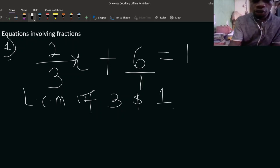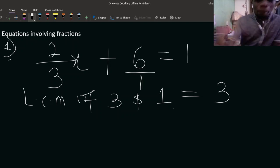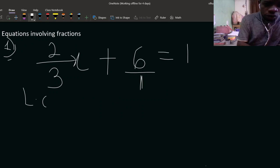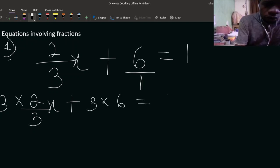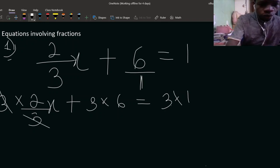That is the denominator. So we have three. Then multiply two by this LCM. So multiply two by this LCM. You're going to be having three times two over three x. Three times six is equal to three times one. Don't forget you are multiplying through. So here now three cancel out three, so you have 2x plus 18.